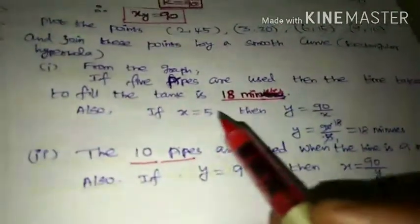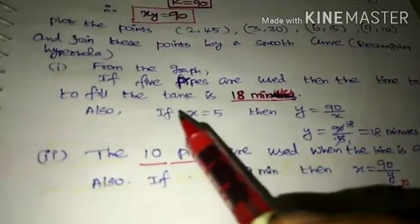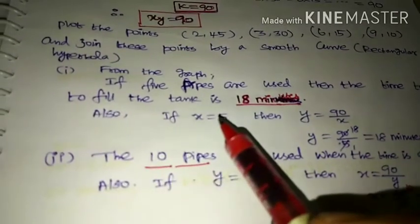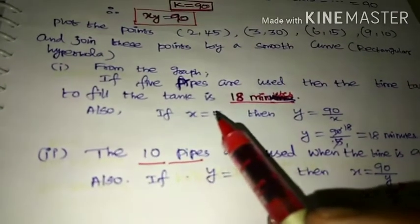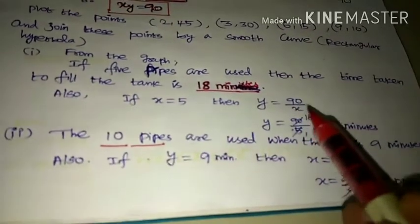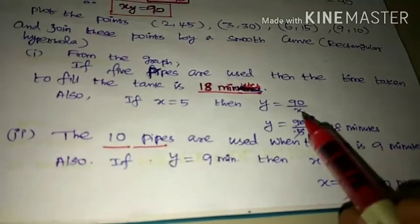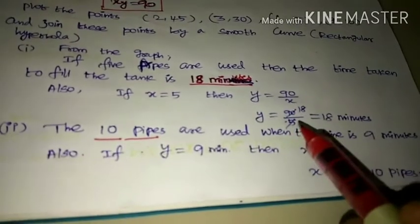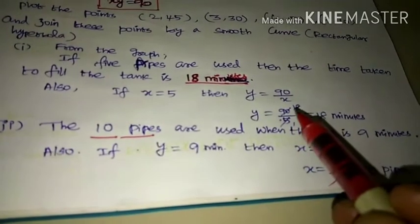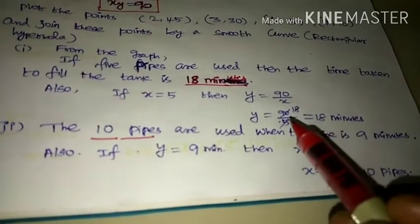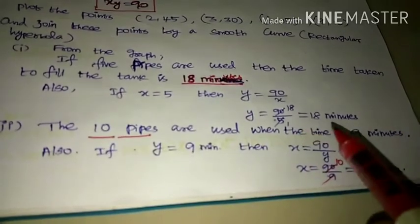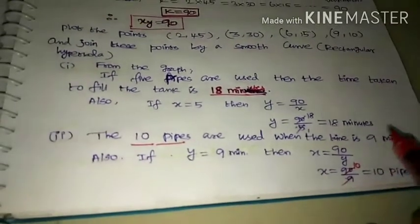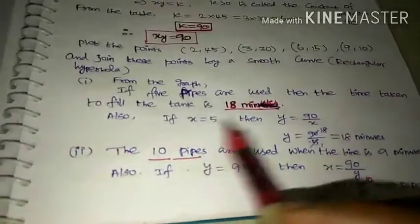Now let's verify using the equation. If x equals 5 pipes, then y equals 90 by x equals 90 by 5 equals 18. So the time taken is 18 minutes. The first question is complete.